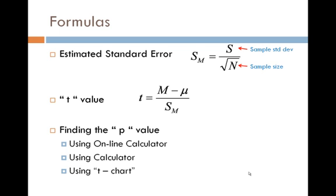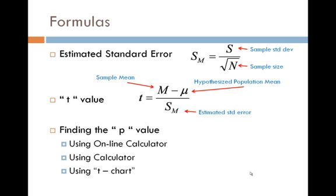So in the estimated standard error, you want to know the sample standard deviation and the sample size. When you're looking for the t-value, you want to know your sample mean, your hypothesized population mean, and your estimated standard error. Now when you get to that p-value, the biggest thing to remember are your degrees of freedom. Remember, that is one less than your sample size.